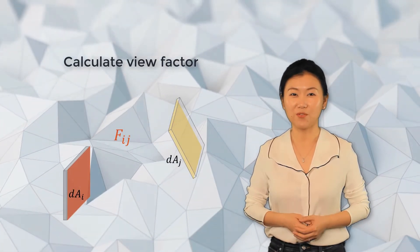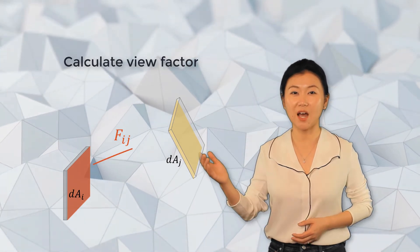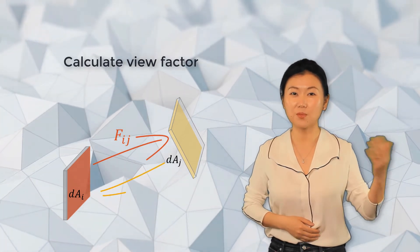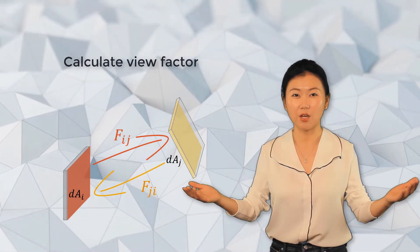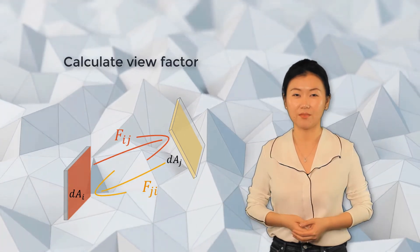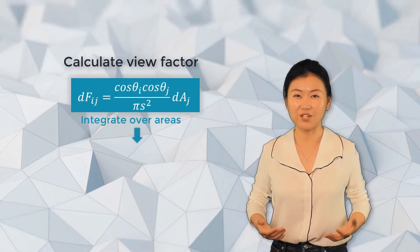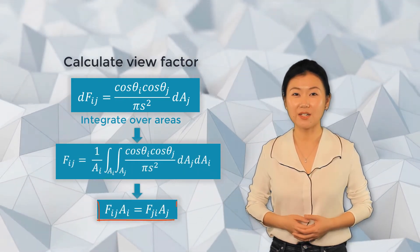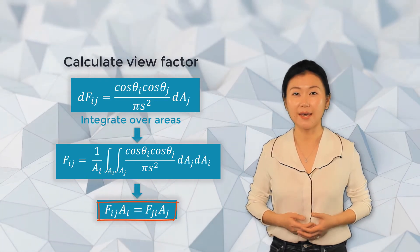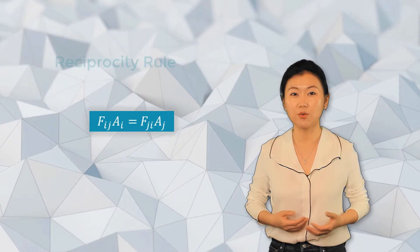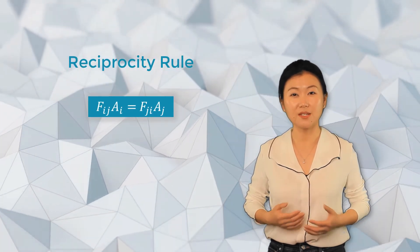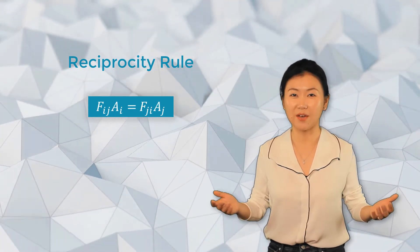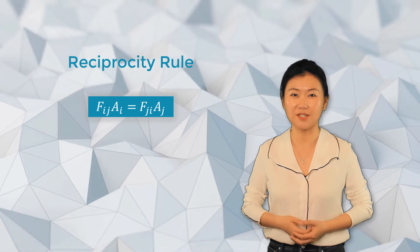We've been talking about view factor Fij, that is from surface i we're looking at surface j. But how about the other way around? What is the view factor from surface j to surface i? Will Fji equal to Fij? To find that out, let's integrate the differential view factor over surface i. With some algebra, you'll find that the product of Fij and area i is equal to the product of Fji and area j. We call this reciprocity rule. It indicates that in general, Fij is not equal to Fji unless the area of the two surfaces are the same.